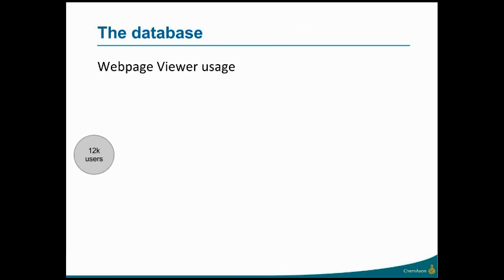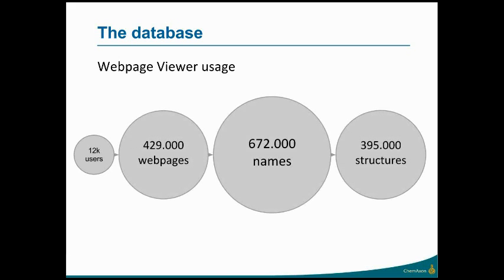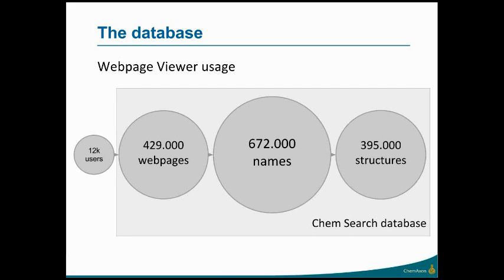Now let's start with the database. We have a service called Webpage Viewer which has roughly 12,000 users a month and is growing. These users contributed 429,000 web pages to our database, from which we extracted over 600,000 chemical structure names, which converted to almost 400,000 unique structures. This is a really big and powerful crowd-sourced database, and it is the basis for many of our services like the ChemSearch database.